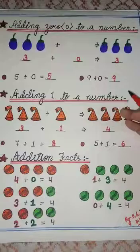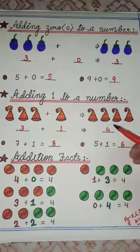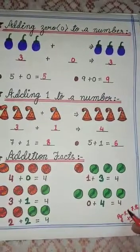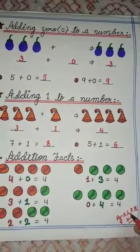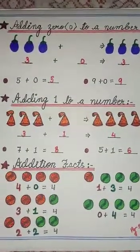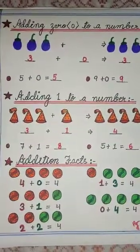There you have adding 0 to a number, adding 1 to a number, and addition facts of different numbers in your book. Page number 5, 6, 7 and 8, you can do this as your homework. Okay children? Take care. Bye-bye.